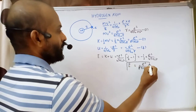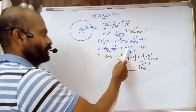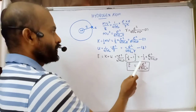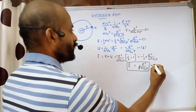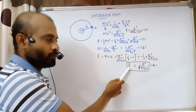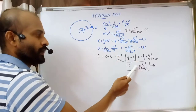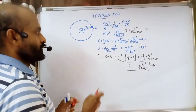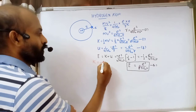The total energy equals minus e squared by eight pi epsilon zero r. This is equation number four for total energy. Comparing equation one and equation four, we see that kinetic energy and total energy have the same magnitude but opposite sign — kinetic energy is positive and total energy is negative.